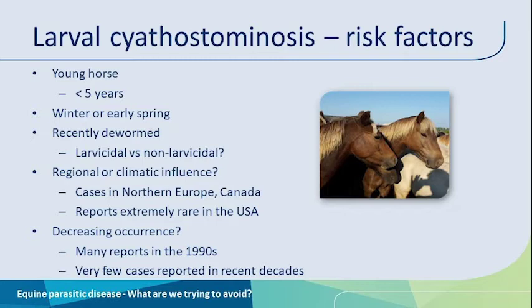From observations in recent years, we continue to see cases although at a very low rate in northern Europe and Canada. I have heard about cases here in New Zealand, though I don't think it's very common. In contrast, in most of the United States, there are barely any reports at all. I live in Kentucky, which has a very high concentration of horses and young horses, and despite that, no one really ever sees this disease there. So is there maybe a regional or climatic influence? That's possible.